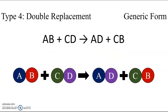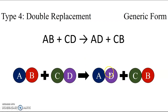The next type of chemical reaction listed in your reference tables is the double replacement reaction. Here we have two compounds on the reactant side and two different compounds on the product side, but the elements have switched partners. A and B are together and C and D are together on the reactant side; then A and D are together and C and B are together on the product side — similar to the FOIL method from math.